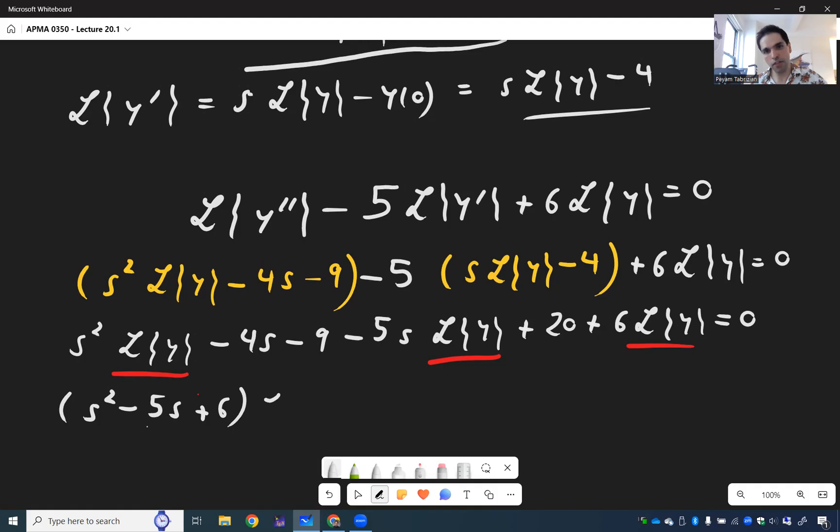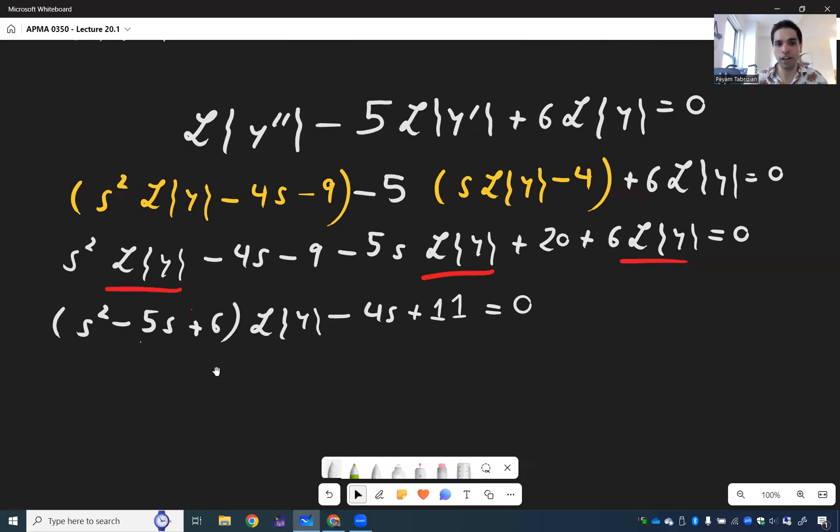And the rest we can have. So we have minus 4S minus 9 plus 20, that's plus 11, equals 0. And now we can solve for L of y.